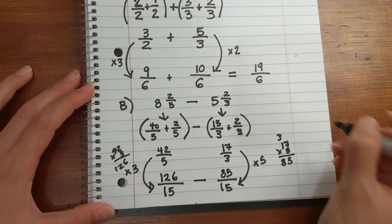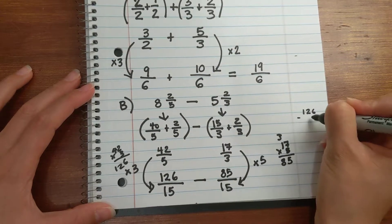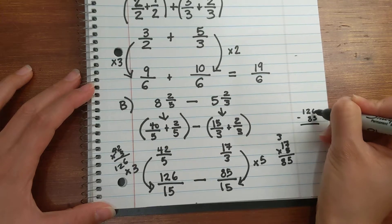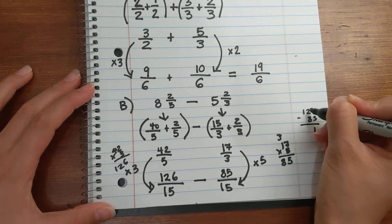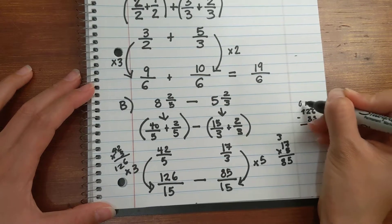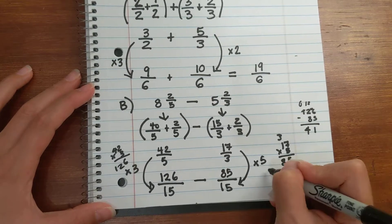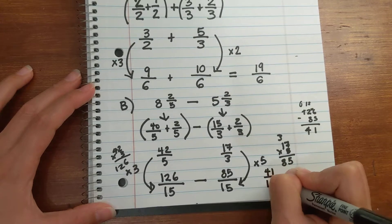So subtract those two: 126 minus 85. I cannot do that in my head. To regroup, oh, I don't have to regroup. 6 minus 5 is 1. Here I have to regroup: 12, 0, 4, 41. So 41 fifteenths.